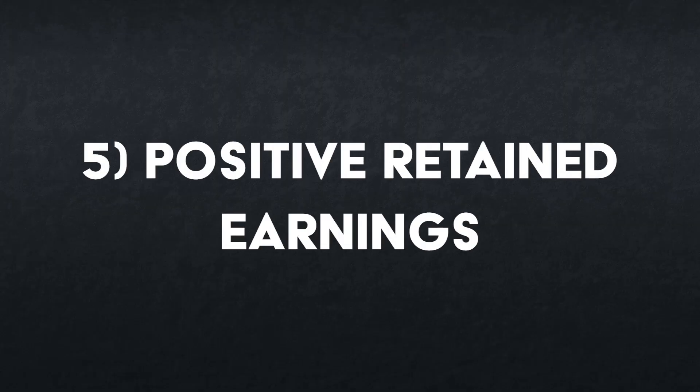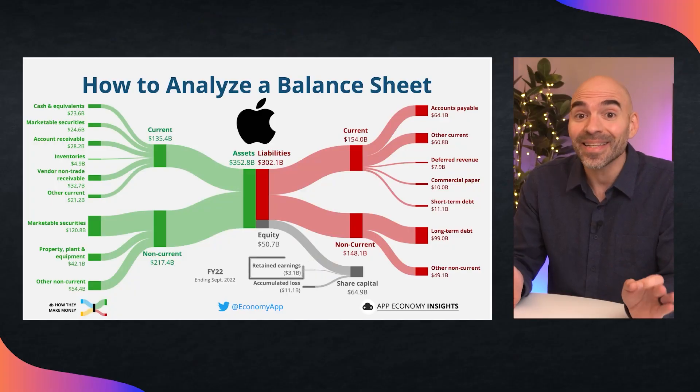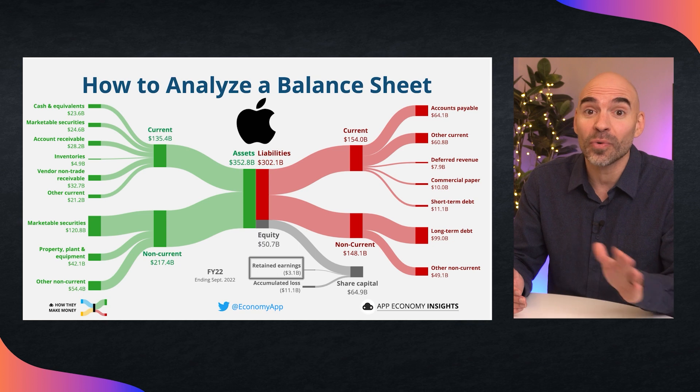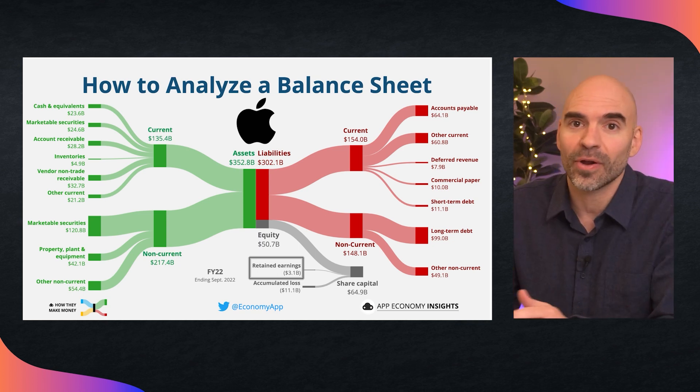And finally, number five is positive retained earnings. A company with a healthy balance sheet should have positive retained earnings that can be used for reinvestment in the company's operations, to pay off debt, or for other purposes. Paradoxically, Apple has slightly negative retained earnings because it has bought back its shares so aggressively — again, not a concerning sign here.